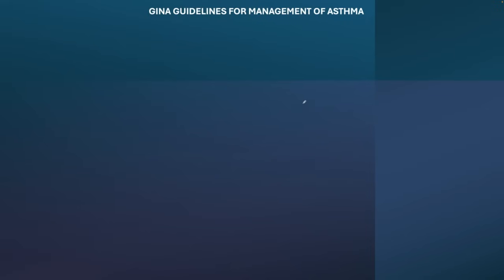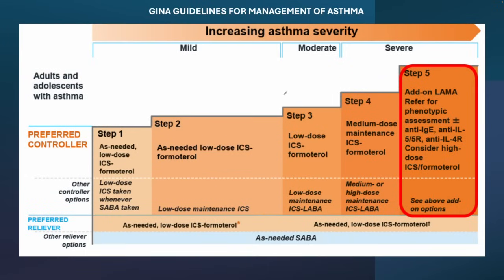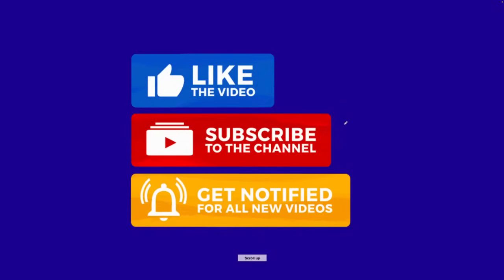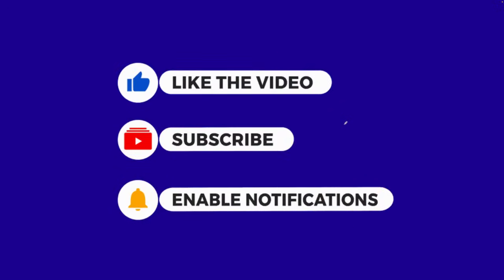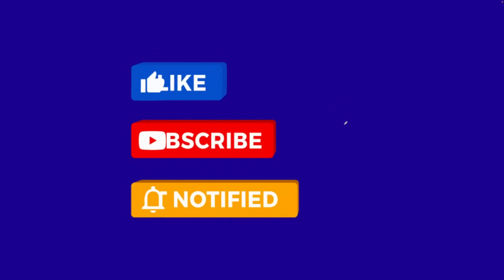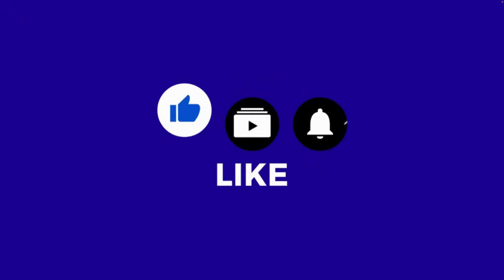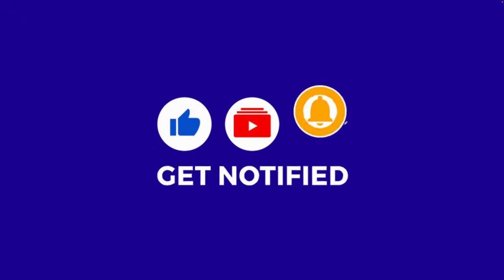According to the GINA guidelines for management of asthma: start with ICS and SABA, then include formoterol, then move from low dose to medium dose, then add LAMA. We have also included theophylline, leukotriene antagonists, and biologics. This is all about the treatment of asthma. I hope this session is helpful. We will meet again in the next session — take care and have a good day.